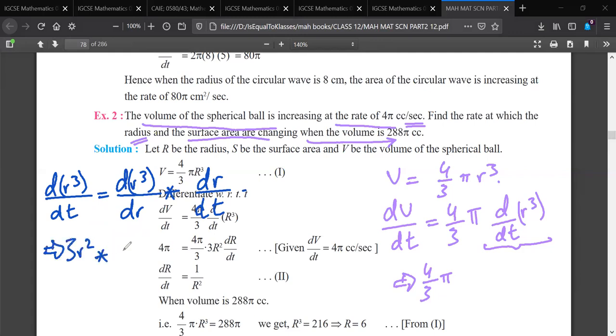And this would be equal to 3r² into dr/dt. This would be equal to 3r² dr/dt. So you have to come on here. Here rate of change of volume.